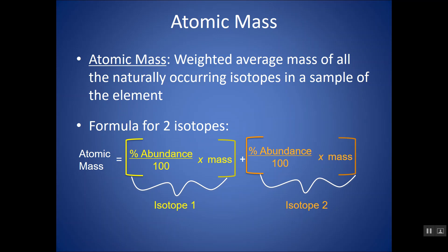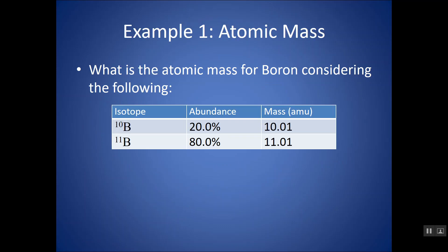So percent abundance and mass would be things that are given to you of those isotopes. So the best way to really look at this is to just do an example, because at first glance, this equation might look intimidating, but it's really easy to use. So take a moment, look at this example, pause the video, and try it. What is the atomic mass for boron, considering the following? There's two naturally occurring isotopes, naturally occurring meaning isotopes that are found in nature for boron.